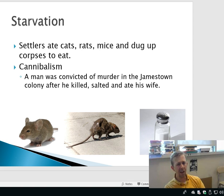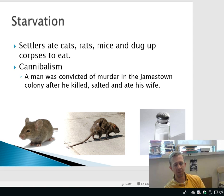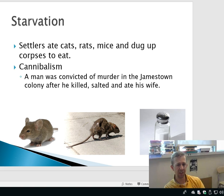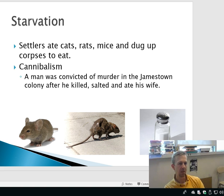They ate whatever they could find, and they weren't looking to grow food even though you could definitely grow food in Virginia. They ate cats, rats, mice. They dug up human remains to eat. A man was once convicted of murder in the Jamestown colony after he killed, assaulted, and ate his wife. Cannibalism happened in the first colonies, just to stay alive.